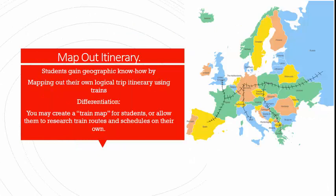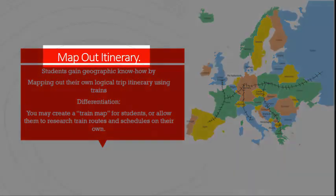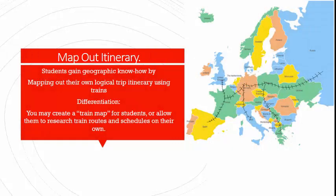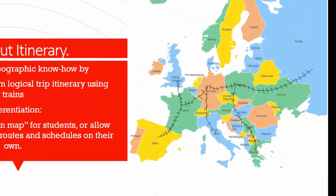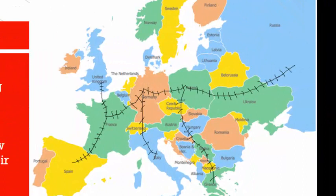Sixth graders can still imagine and play that they are really going on this project, so take advantage of that. One of my favorite aspects of this project is to have students map out an itinerary. Students will gain geographic know-how by mapping out their own logical trip using trains. So this map here, which is 100% fake that I have drawn train tracks on, allows students to think logically about their trip. You don't want to start in Italy, then go to England, to finally end up in France.